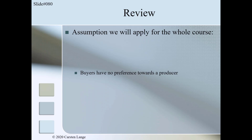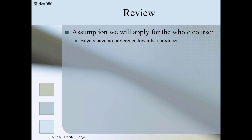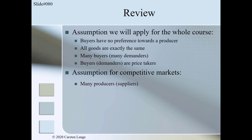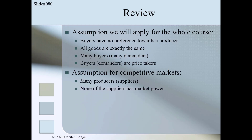Let's review. For the whole course, you should have at least three of the four assumptions: first, buyers have no preference towards a producer; second, all goods are exactly the same; third, the market consists of many buyers — many demanders; and fourth, buyers are price takers. From the three additional assumptions for a competitive market, you should remember at least two: many producers or many suppliers; none of the suppliers has market power; and producers are price takers. Hope you got them all right.